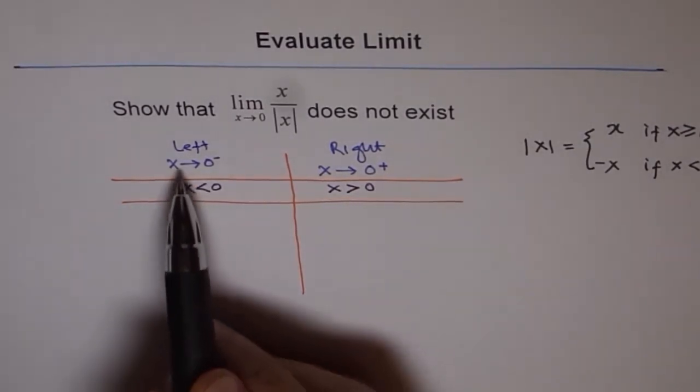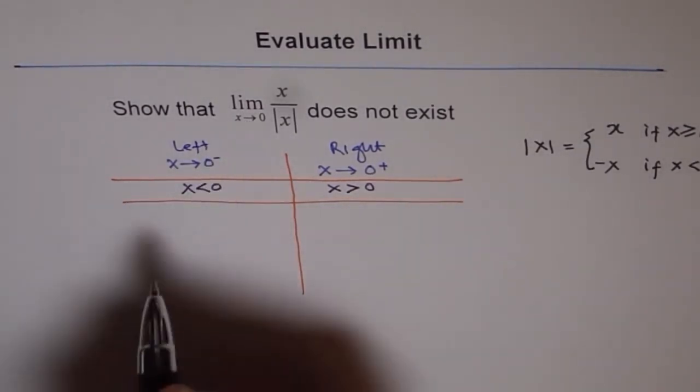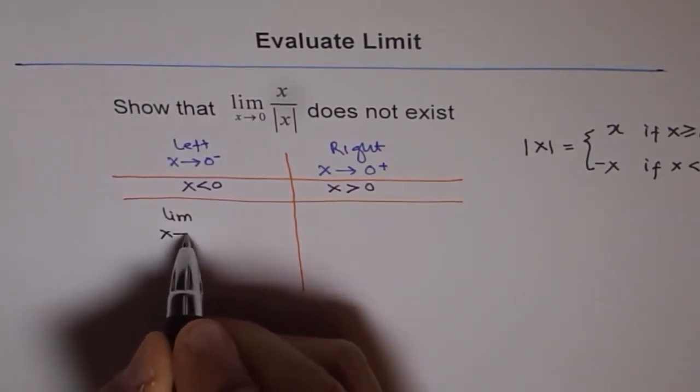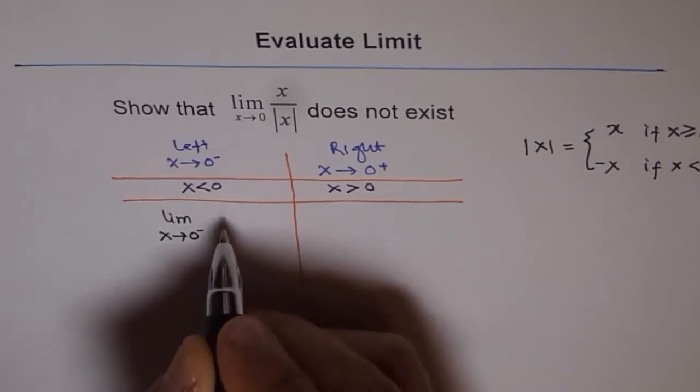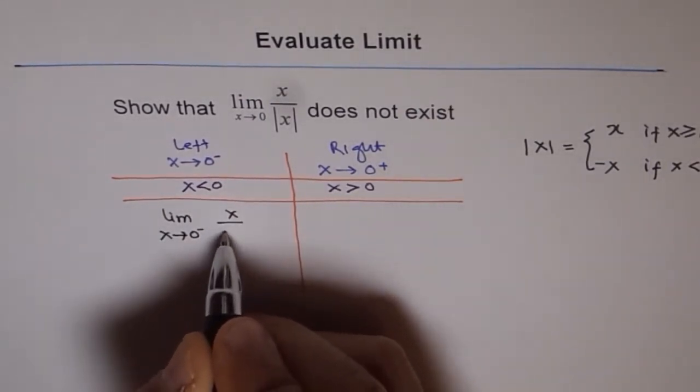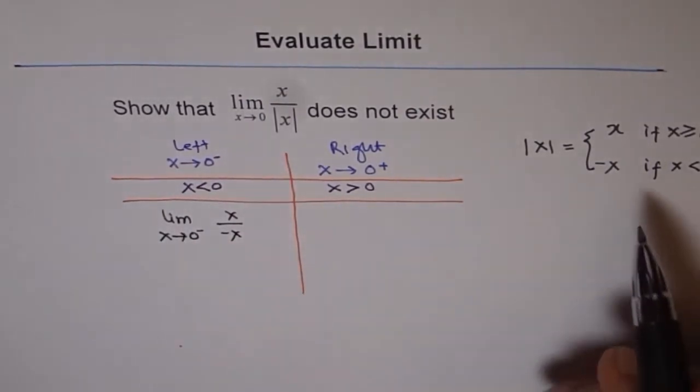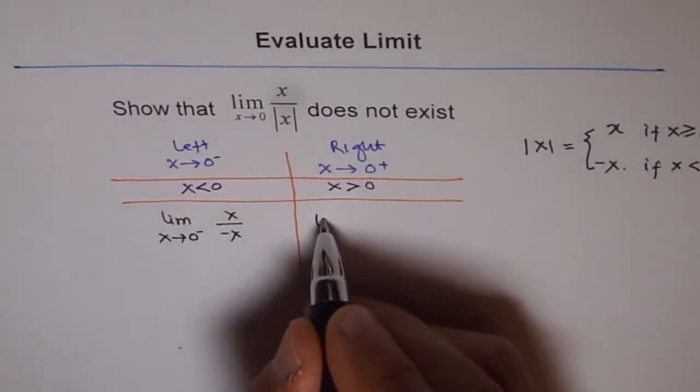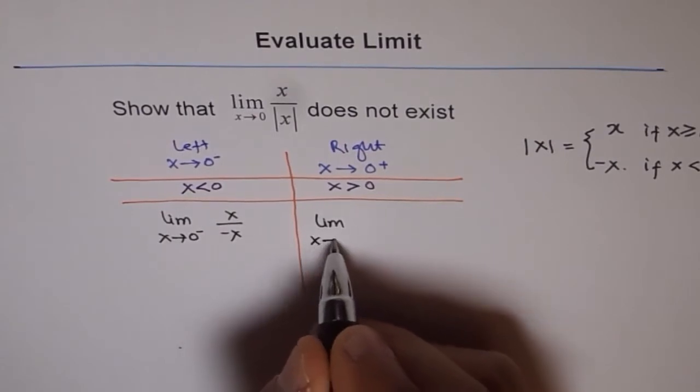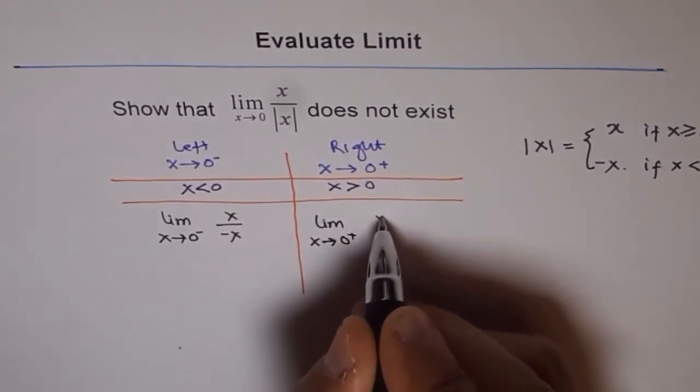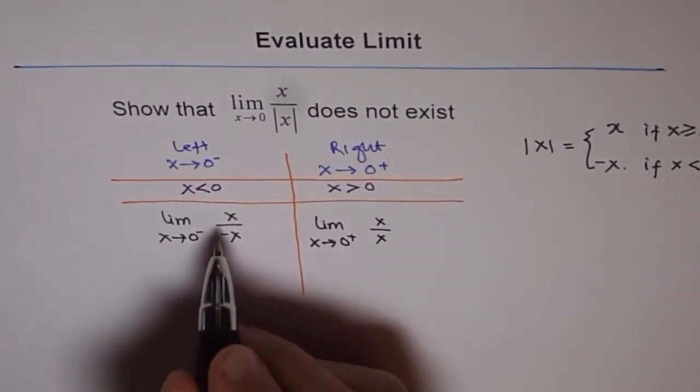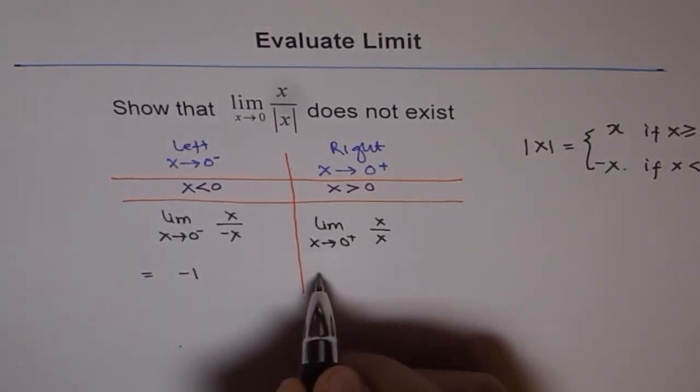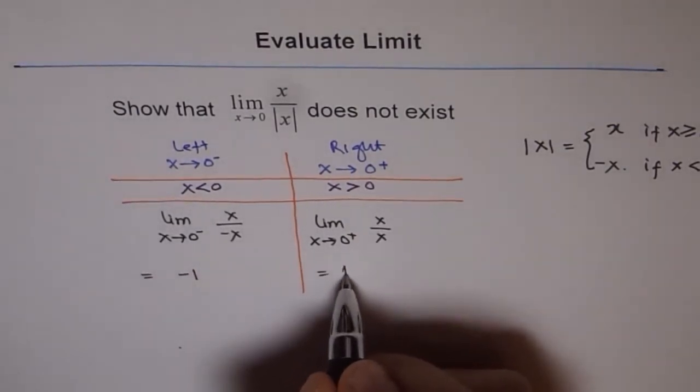Since you are approaching from this side, our function reduces to limit x approaching 0 from negative side, x over minus x. And if you are approaching from the positive side, the function becomes x over x. Now, x divided by minus x is minus 1, whereas x divided by x is plus 1.